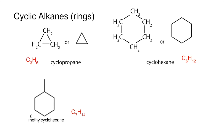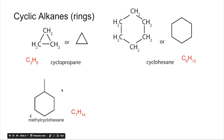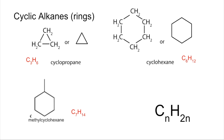You can also get cyclic alkanes — alkanes that have formed rings. There are three examples on the screen: cyclopropane, which you can represent structurally or as a skeletal formula, has the molecular formula C3H6. Then cyclohexane is C6H12, and methylcyclohexane is C7H14. The general formula for cyclic alkanes is CnH2n.